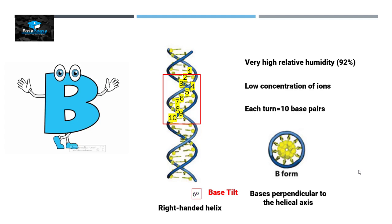The diameter of B form is approximately 20 angstroms, and the length of each turn is approximately 34 angstroms. The distance between the two base pairs, like this is the first base pair and this is the second base pair, is called helical rise. In B form, the helical rise is approximately 3.4 angstroms.